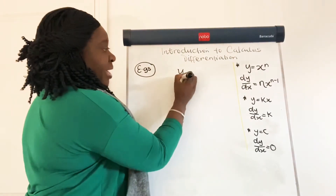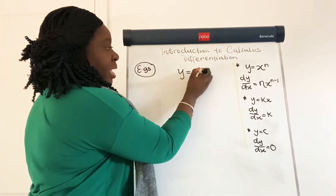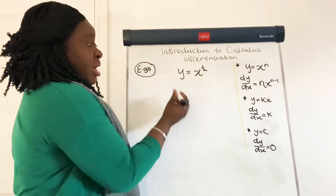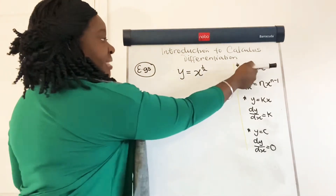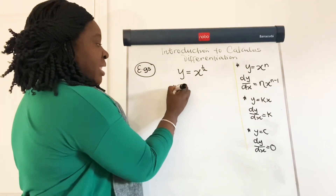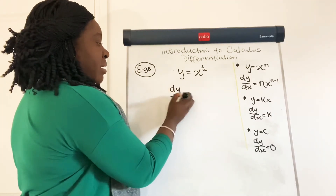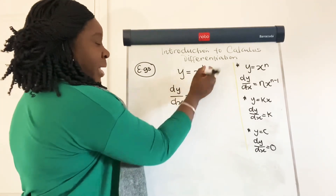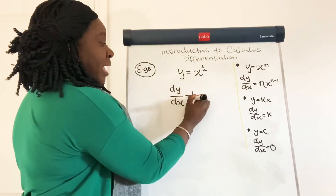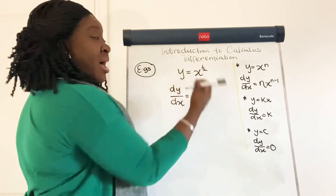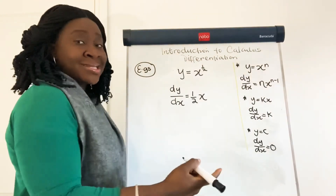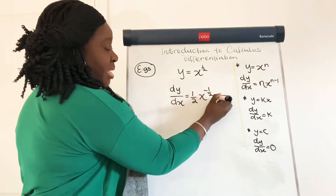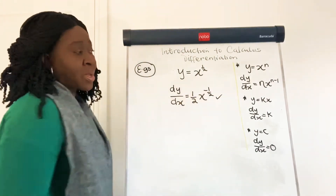Here's an example with a fractional power: y is equal to x to the power of a half. If we use the same rule, then dy by dx — we multiply by the power — would be half x to the power of a half minus 1, which is minus a half. And that would be the answer to that one.